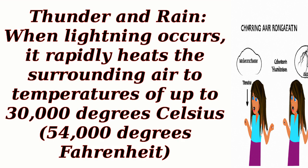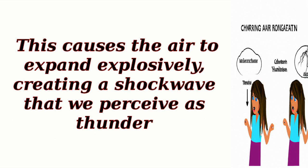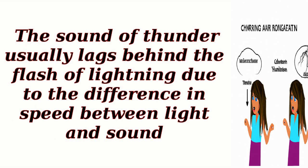Thunder and Rain. When lightning occurs, it rapidly heats the surrounding air to temperatures of up to 30,000 degrees Celsius. This causes the air to expand explosively, creating a shockwave that we perceive as thunder. The sound of thunder usually lags behind the flash of lightning due to the difference in speed between light and sound.